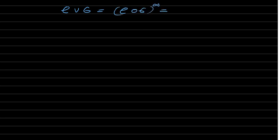This infinity is actually a notation. It is equal to the union where n runs from 1 to infinity of rho composition sigma power n. Power n means you are composing the relation rho composition sigma with itself n times.